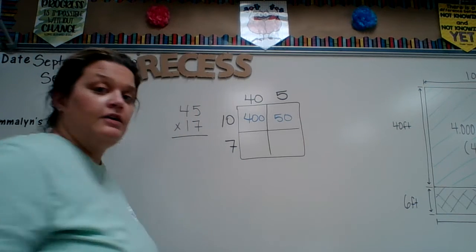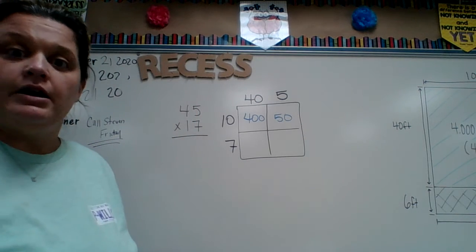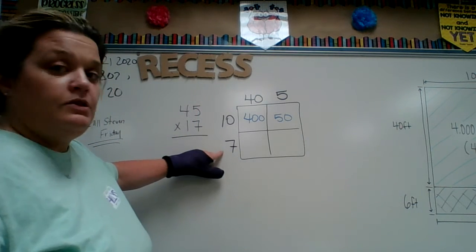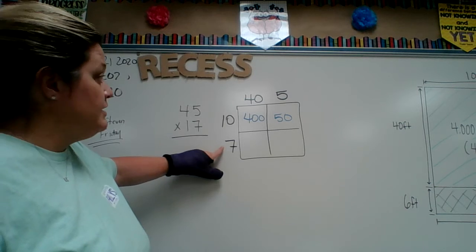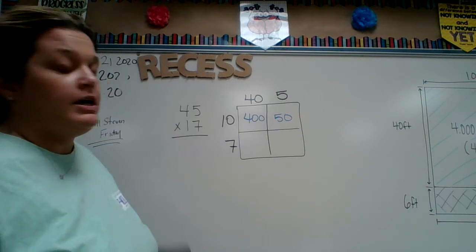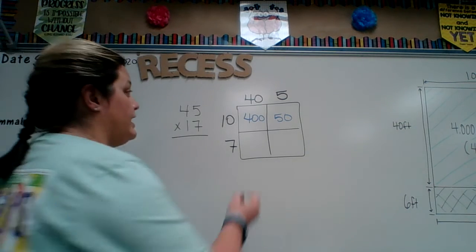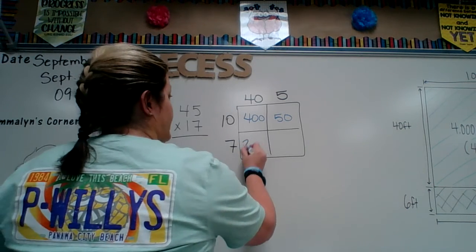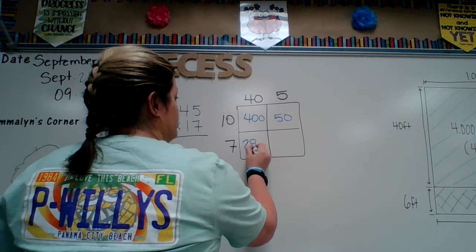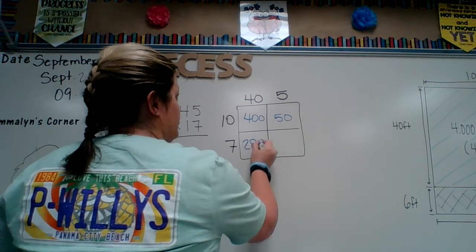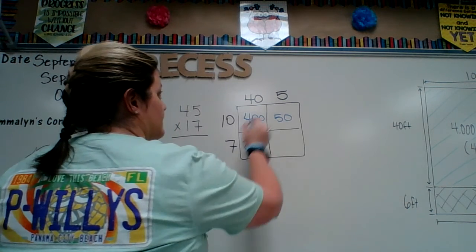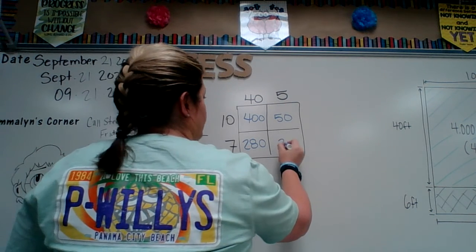So you did that area. This next one, you do the 7. Same thing: 7 times 40. 7 times 4 is 28, and I have my zero, which is 280. 7 times 5 is 35.